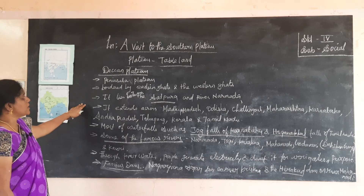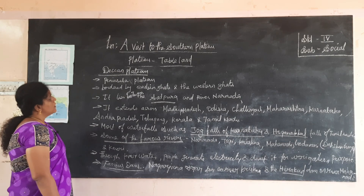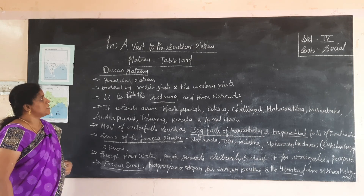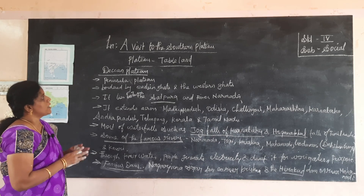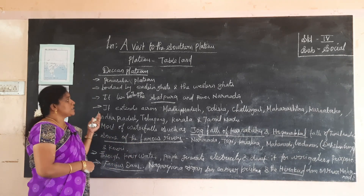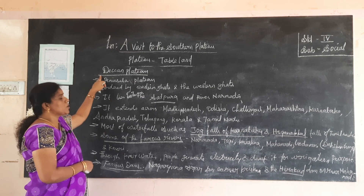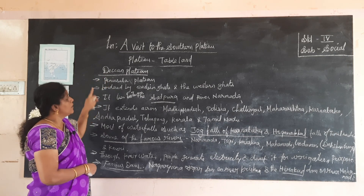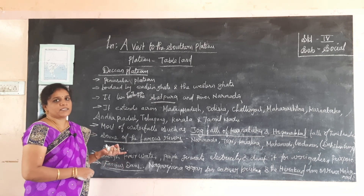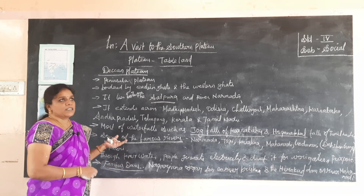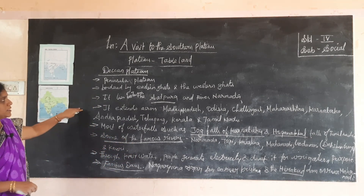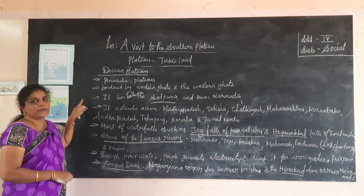These are the details about the southern plateau. The river Narmada has divided the southern plateau into two parts: the Central Highlands and the Deccan Plateau. In the next video we will see the people, their lifestyle, dresses, vegetation, and food habits. If you have any doubts, you can ask me anytime. Thank you.